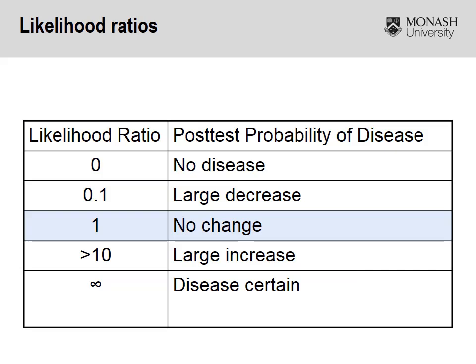A likelihood ratio of one indicates that the test won't provide any change in terms of post-test probability — doing the test is fairly useless, and it won't either rule in or rule out the particular illness or disease. A positive likelihood ratio approaching 10 indicates a large increase in the probability that the patient does have the disease. A negative likelihood ratio close to zero suggests the test is a strong test at ruling out the disease.